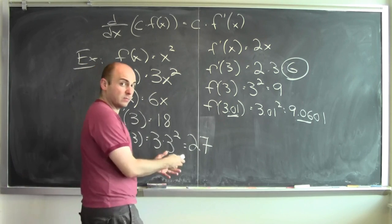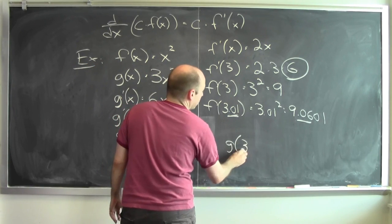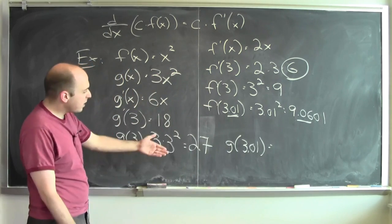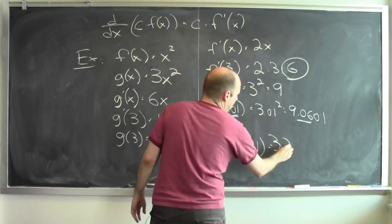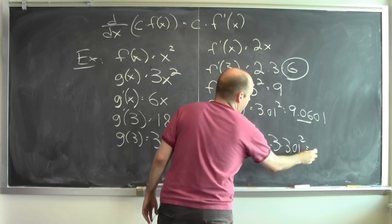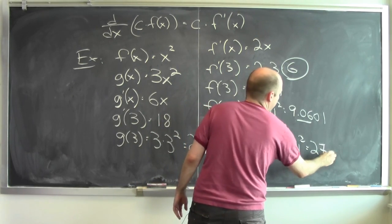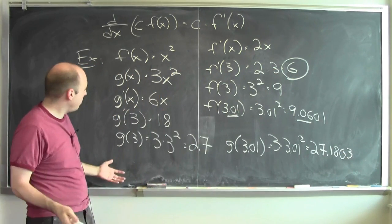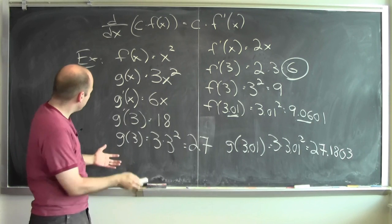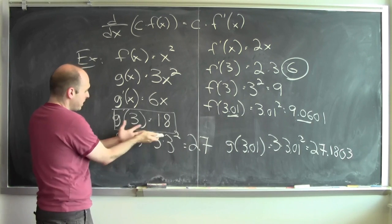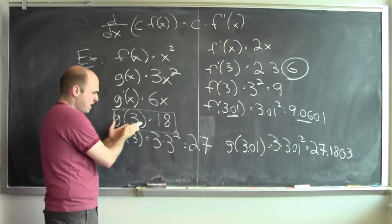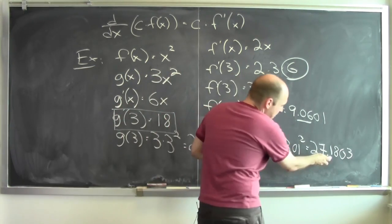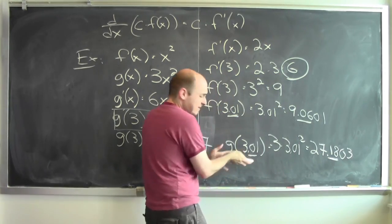And what happens if I plug in something a little bit more than 3? Well, 3.01 into this function. If I plug in 3.01, I'd get 3 times 3.01 squared, which is 27.1803. And then you look at that and you're like, wow. I mean, this sort of makes sense. The derivative of this function is 18 at the point 3. And if I wiggle the input of 3 up by a little bit, the output is increased by 18 times as much.